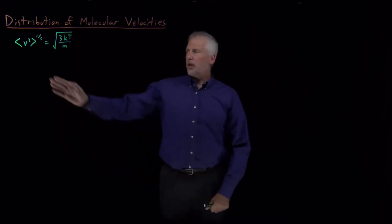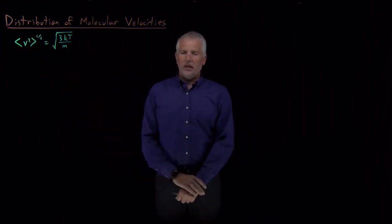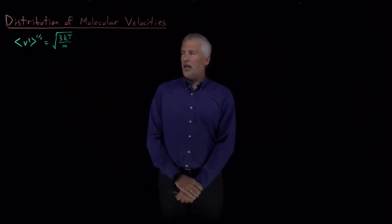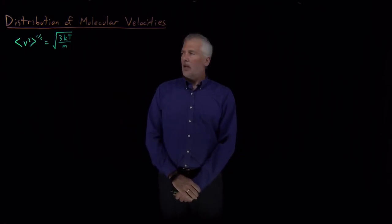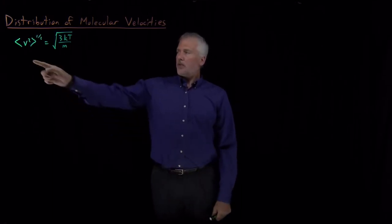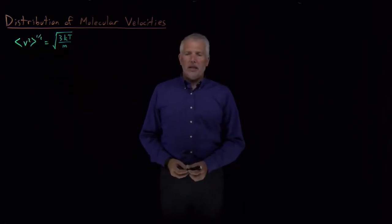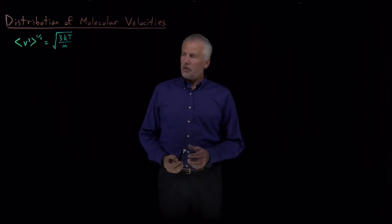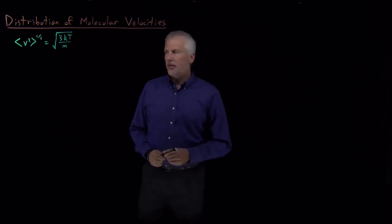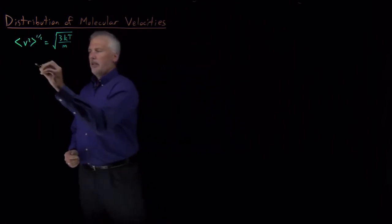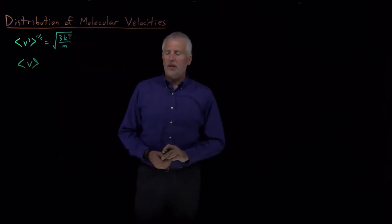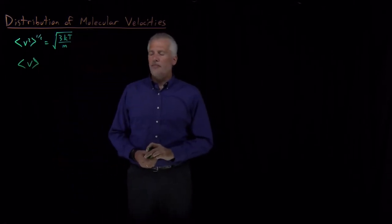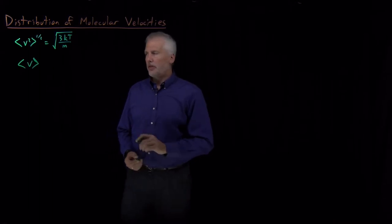We know what the root mean square velocity of a gas is for an ideal gas — it's the square root of 3kT over m. This quantity, the root mean square velocity, is a representative velocity, but it's not the same thing as an average velocity. If what we really want to know is the average velocity or average speed of a molecule, we want to do something a little bit different.